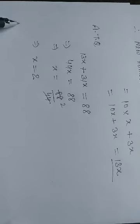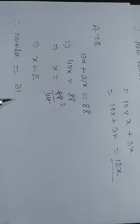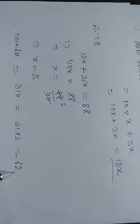Therefore, the number is equal to 31x, that is 31 into 2, which is equal to 62.